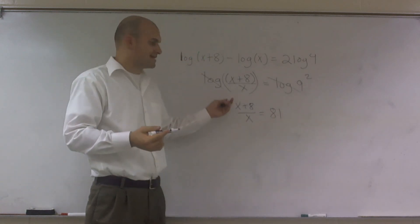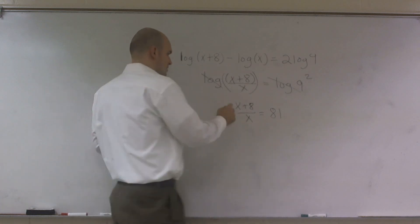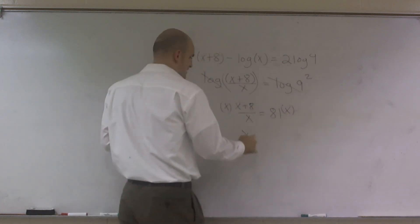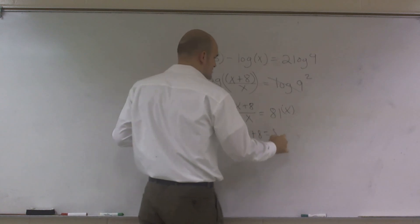Well, from here, I have an x on the top and an x on the bottom. So to get rid of my x on the bottom, I'll multiply by x on both sides. Therefore, I have x plus 8 equals 81x.